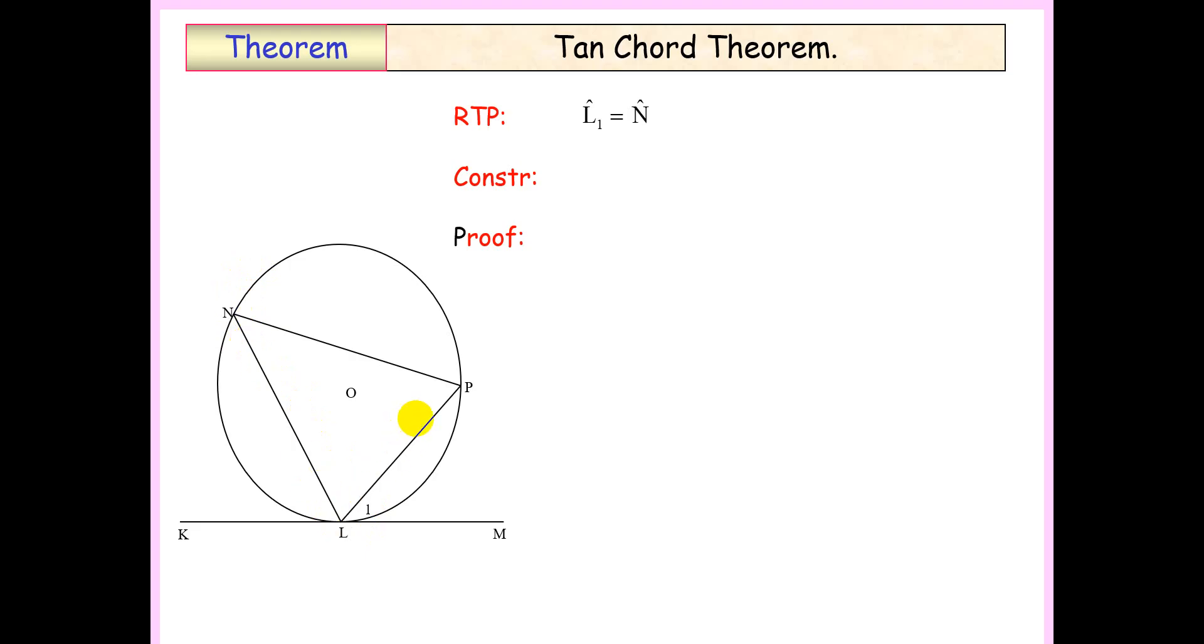So we're going to start off with a construction. We notice that we have a circle with center O, so we're going to join LO and PO. That in turn makes LO and PO the radius of the circle, and we know that LO and PO are now equal.